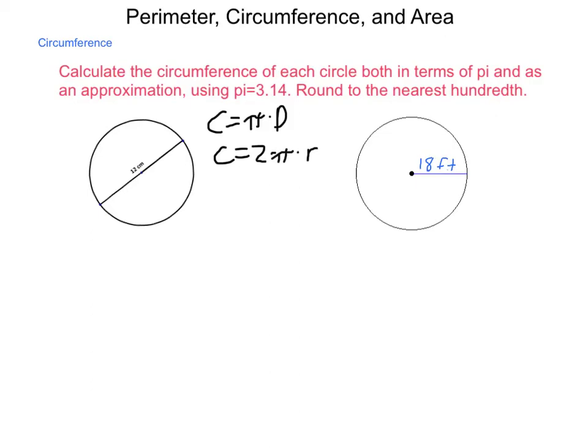So let's calculate the circumferences of these, both in terms of pi and as an approximation using 3.14 as that approximate value of pi. Remember, pi is an irrational number. It's also called transcendental. It is an infinite, non-repeating decimal.